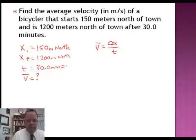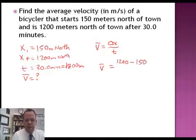So 30 times 60 gives me 1,800 seconds. So my average velocity is going to be my final position minus my initial position divided by 1,800.